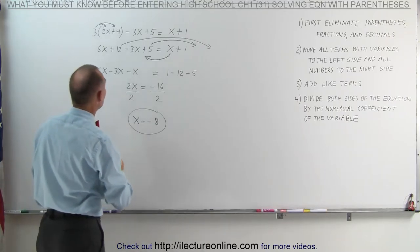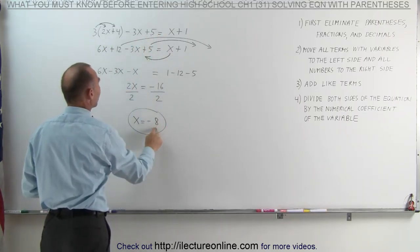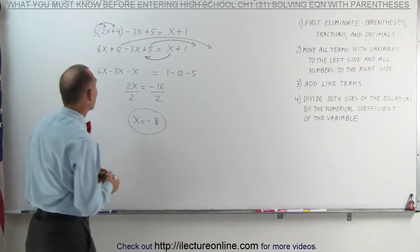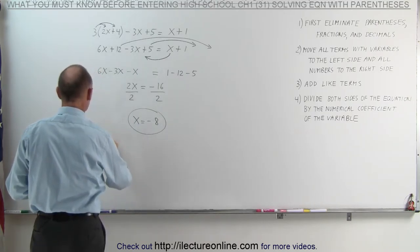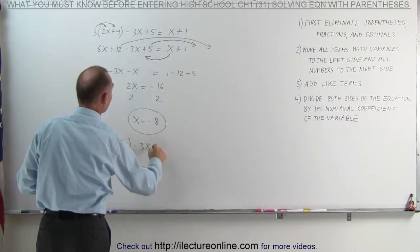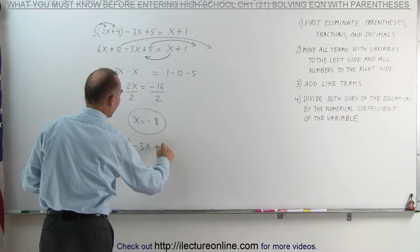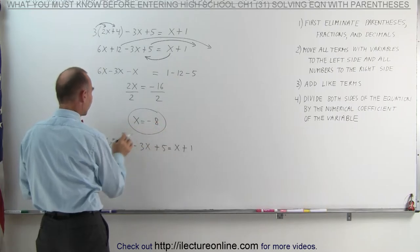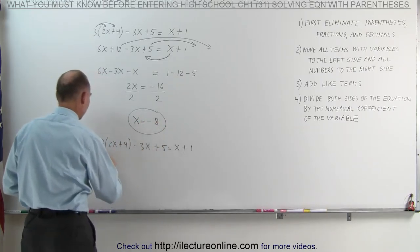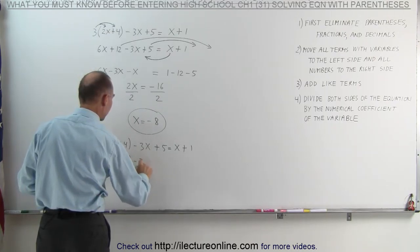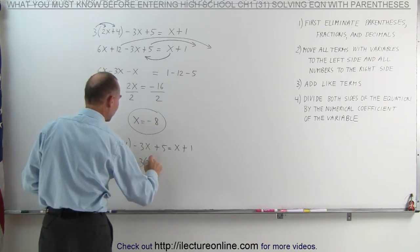We now find that if we replace every x in the original equation with a negative 8, the left side will equal the right side. Let's go ahead and try that just to see how that would work. The original equation was 3 times 2x plus 4 minus 3x, oh, I forgot the plus 5, plus 5 equals x plus 1. We're now going to substitute the negative 8 into each x. This gives us 3 times 2 times negative 8 plus 4 minus 3 times negative 8 plus 5 equals negative 8 plus 1.